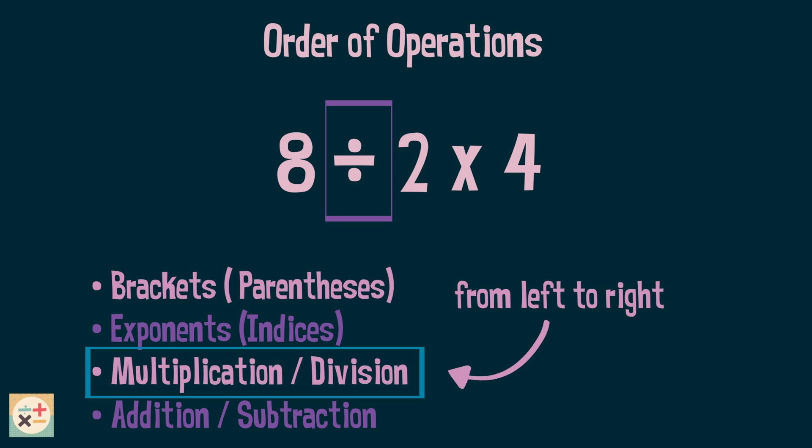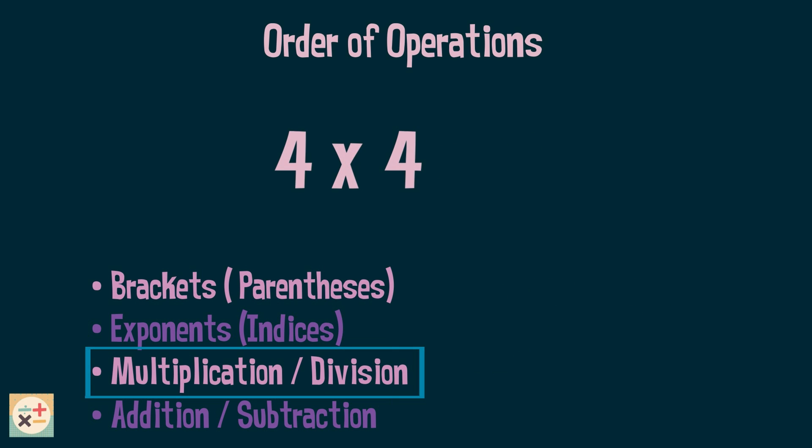8 divided by 2 equals 4. Let's rewrite the expression. We are left with 4 multiplied by 4, which equals 16. This is the answer to this problem if we are following the order of operations correctly. Note that we can ignore the final step, as there is no addition or subtraction left in the expression.